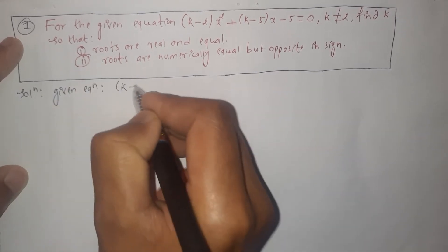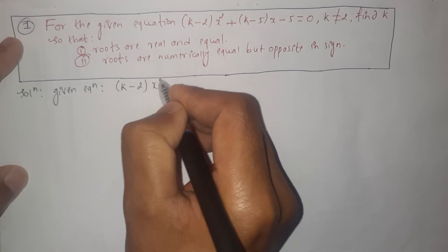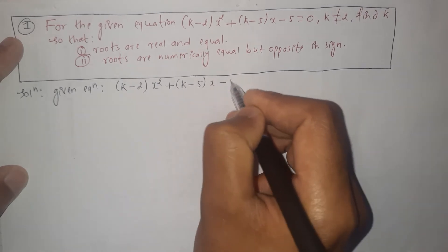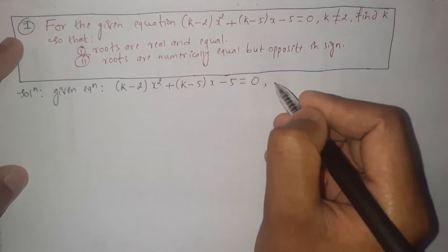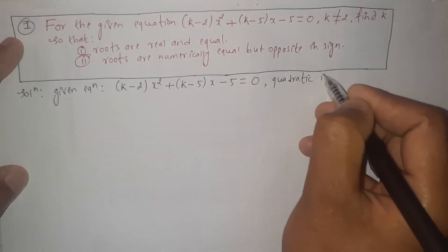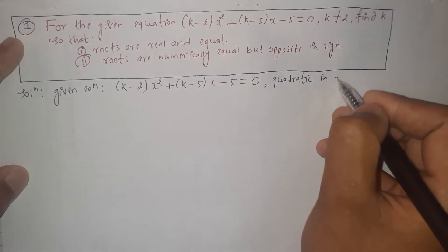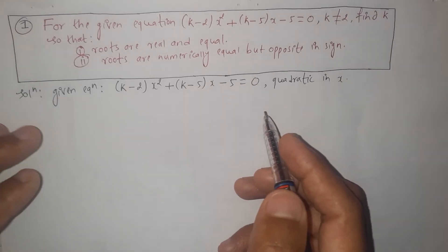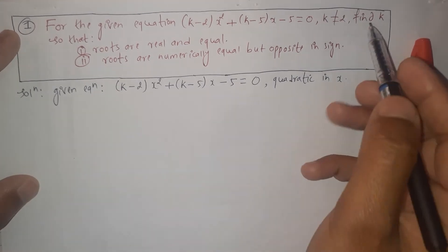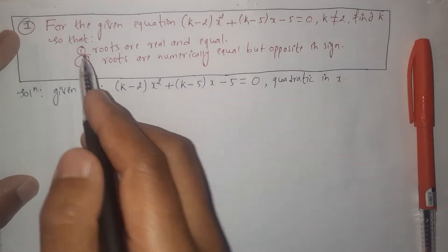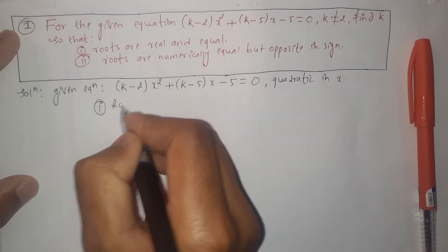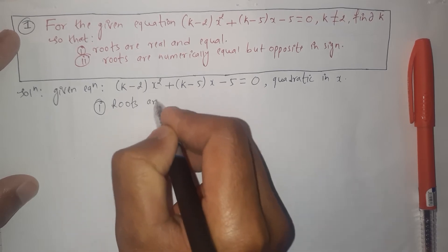The given quadratic equation is (k minus 2)x² plus (k minus 5)x minus 5 equals 0, which is quadratic in the variable x. Now we are going to find the value of k in two cases. The first case is: roots are real and equal.